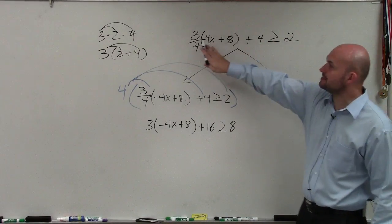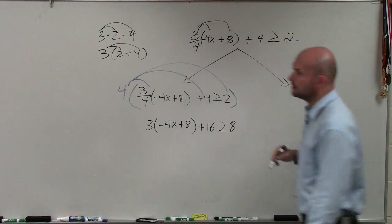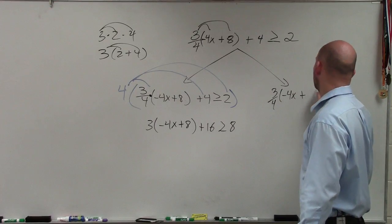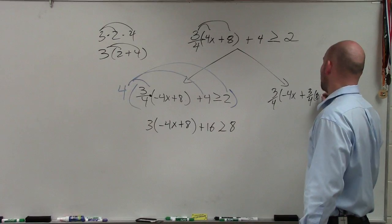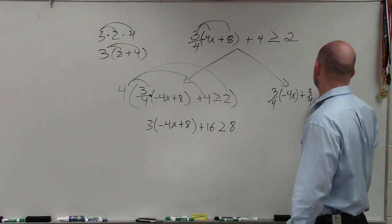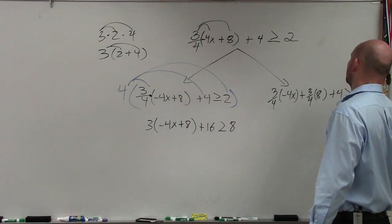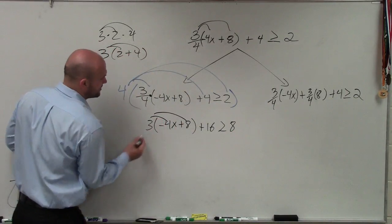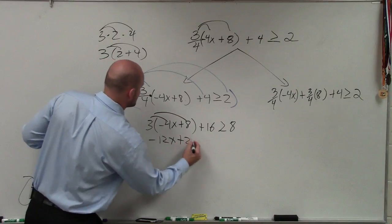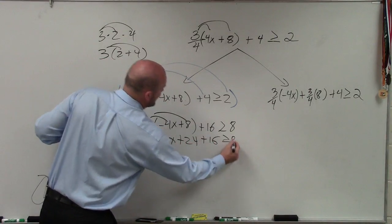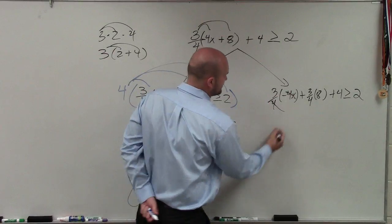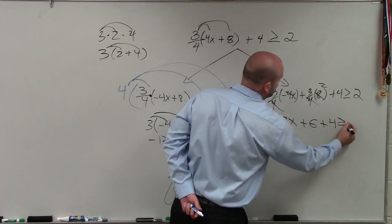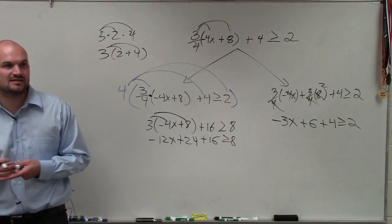The other way you could do this is simply just apply distributive property. So I could do 3/4 times -4x plus 3/4 times 8 plus 4 is greater than or equal to 2. So you could also just apply distributive property. Now let's work through this. If we apply distributive property here, you get -12x + 24 + 16 is greater than or equal to 8. Over here, the 4s divide out. I'm left with -3x. Here, those divide into 2. 2 times 3 is positive 6. Plus 4 is greater than or equal to 2. Anybody have any questions on what I have done? Because I'm doing the problem twice.